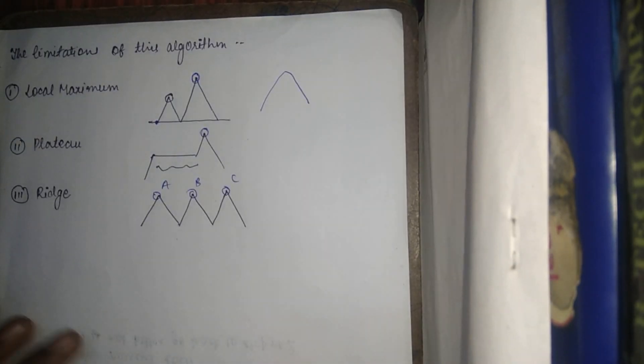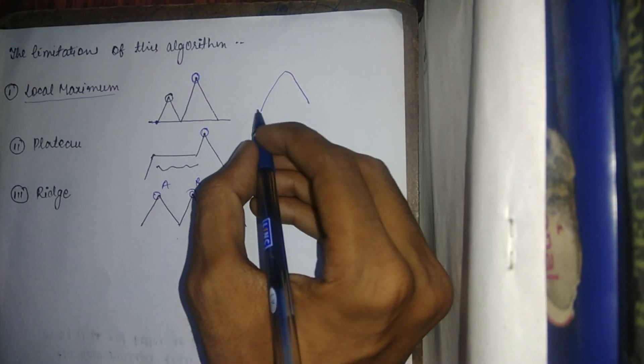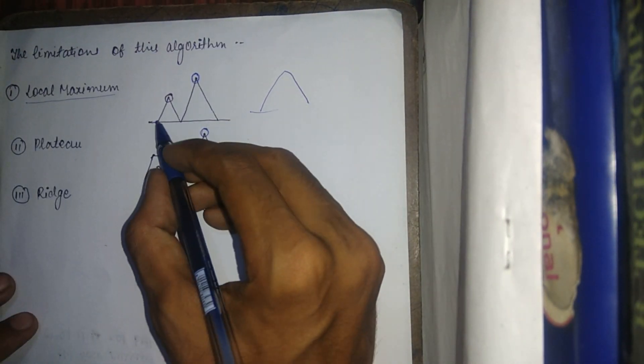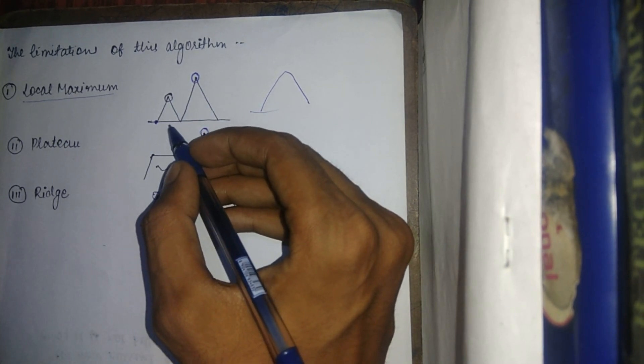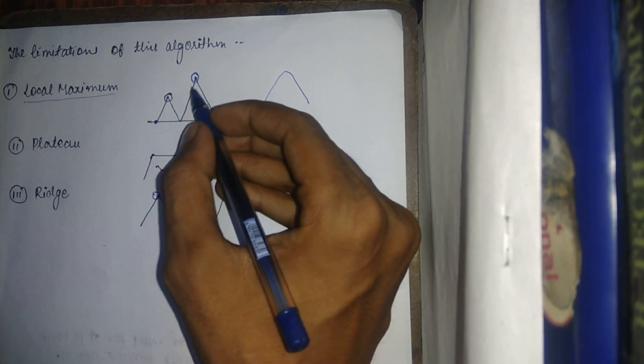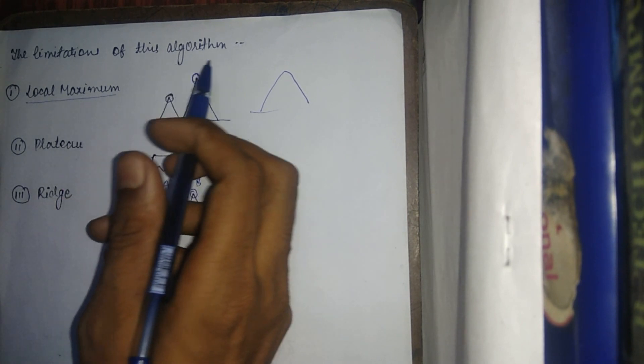Now let's consider the limitations of this algorithm. The first one is local maximum. It may happen that we start from a point and reach a local peak where all neighboring points are decreasing, so the algorithm assumes this is the maximum. However, proceeding further would reveal a higher maximum. The algorithm fails here — this is the first limitation.